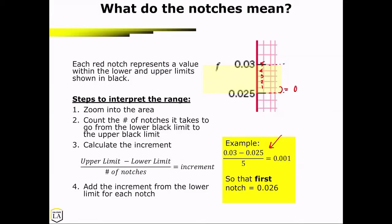So that means that the first notch above 0.025 is going to be 0.026. So we can kind of fill in the notches here. So we have 0.026, 0.027, 0.028, 0.029, 0.03. Do we see that? So that's how we would fill in the notches.